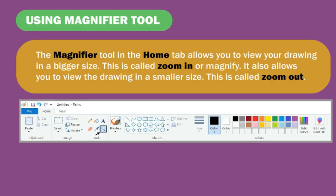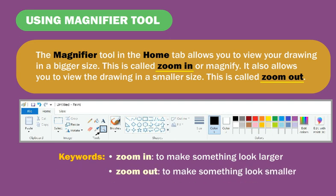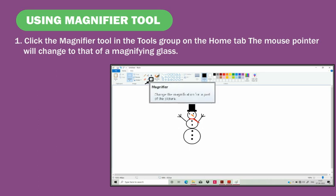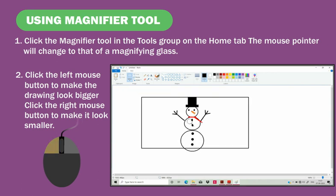The magnifier tool in the home tab allows you to view your drawing in a bigger size — this is called zoom in, or magnifying. It also allows you to view the drawing in a smaller size — this is called zoom out. To use it: click the magnifier tool in the tools group on the home tab. The mouse pointer will change to a magnifying glass. Click the left mouse button to make the drawing look bigger, and click the right mouse button to make it look smaller.